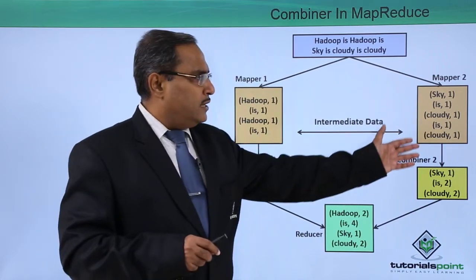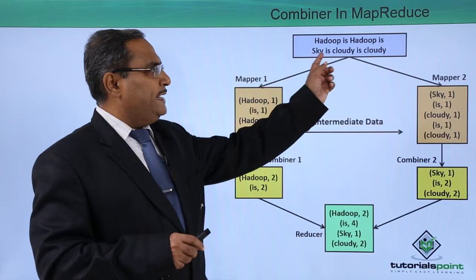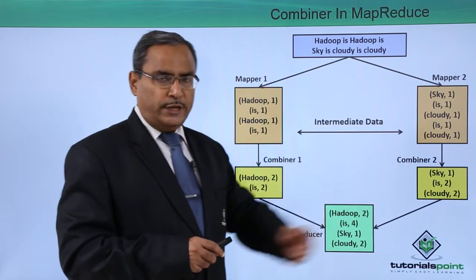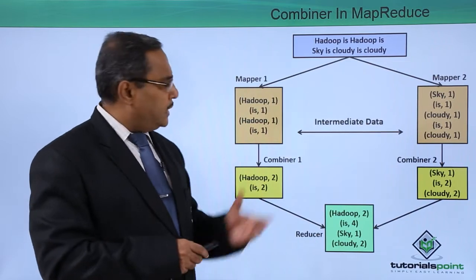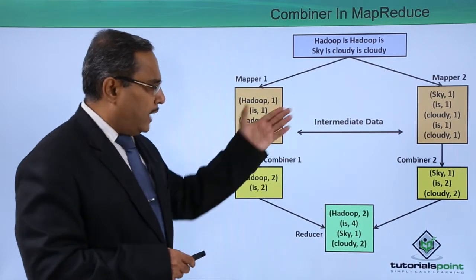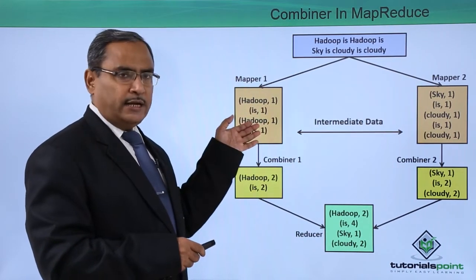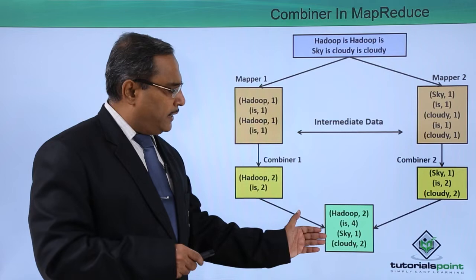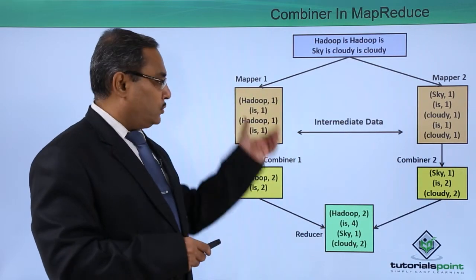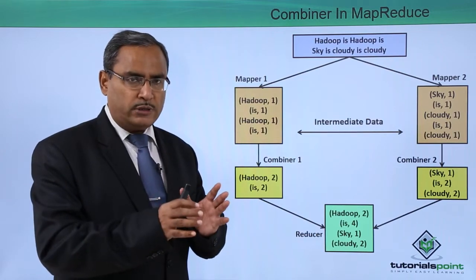Similarly, mapper 2 will be having the data 'sky is cloudy is cloudy,' and it is also producing the respective key-value pairs. These are nothing but intermediate data. Now this data will be available to the combiner — it is not getting sent to the reducer directly, but through the combiners. The combiner is also doing some prior reducing work.